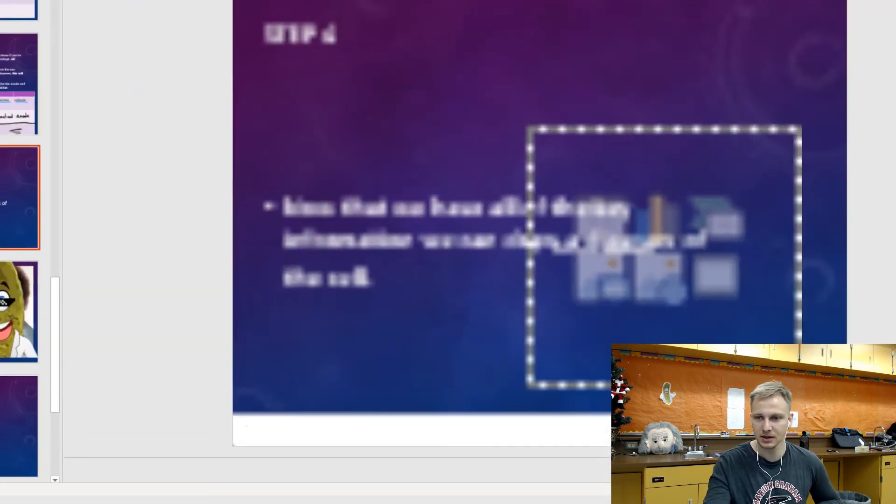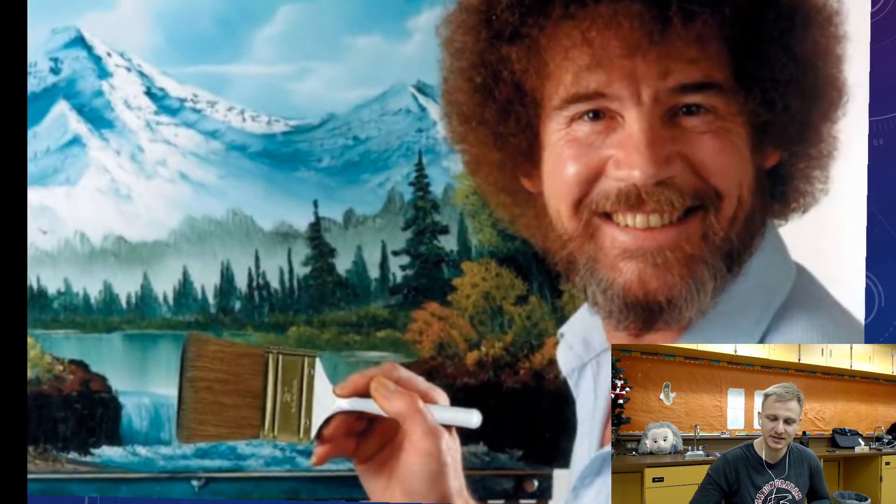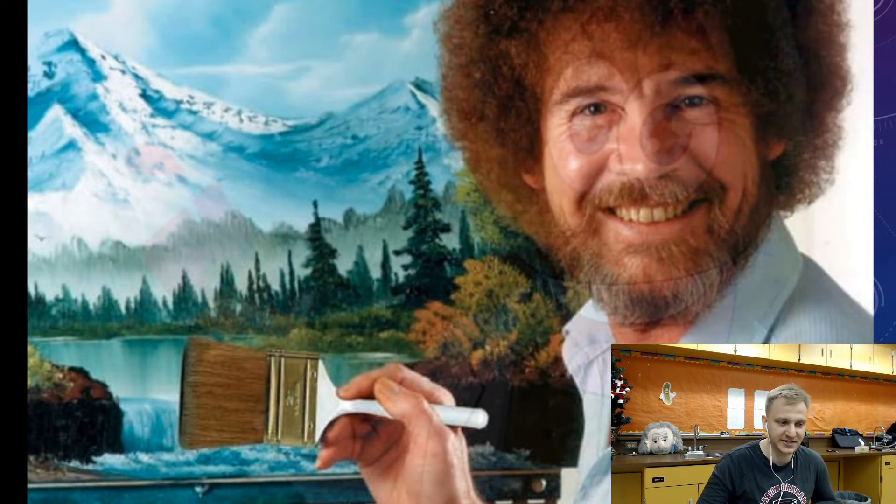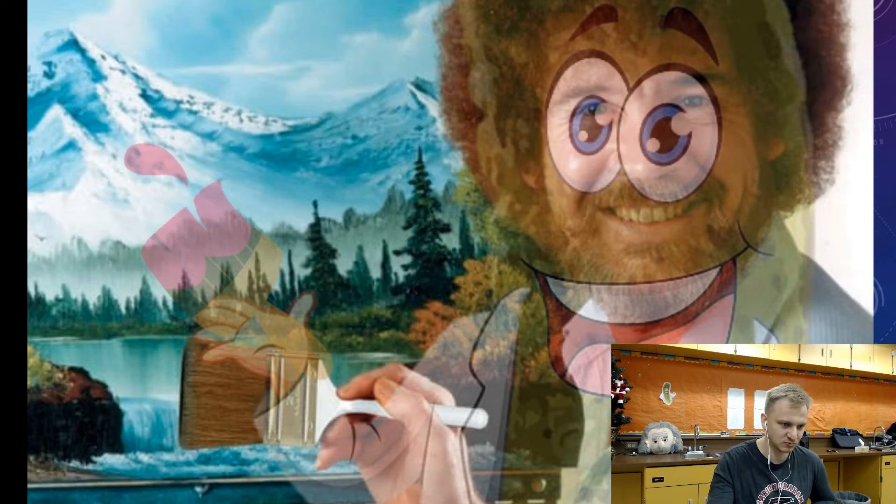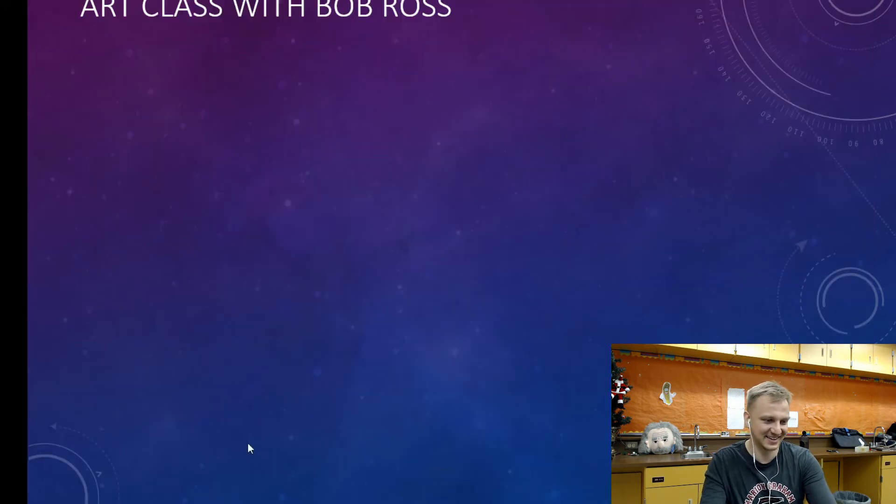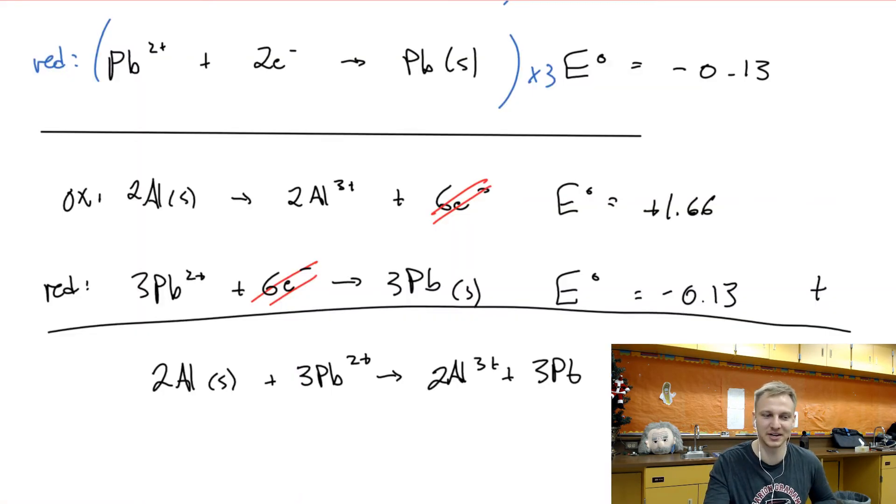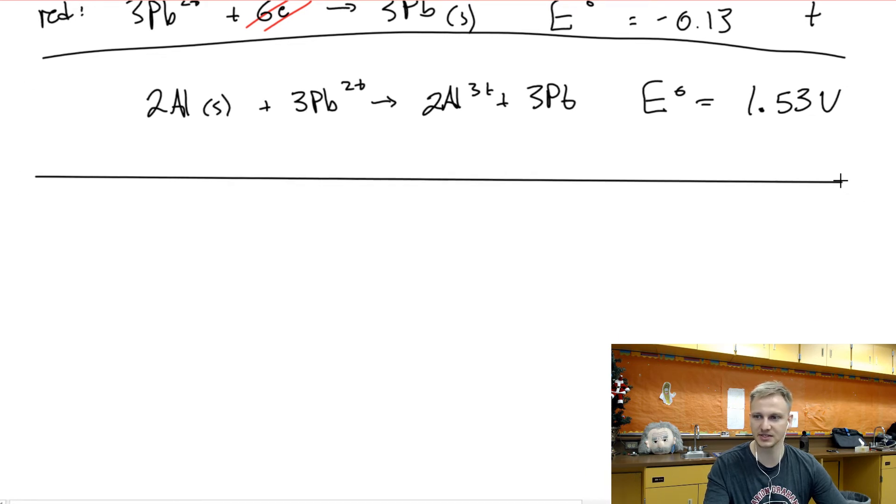So now that we have all of the information, we can actually start to draw our cell. And so my favorite artist of all time is Bob Ross, of course. But as we know, Bob Ross has secretly had a secret identity this entire time. Yeah, and it's me. It's a pathetic meme, super sorry.